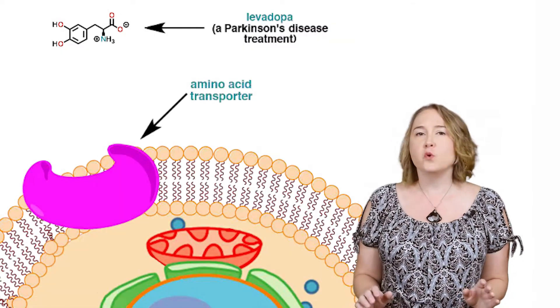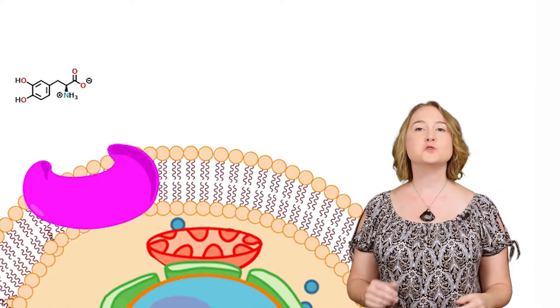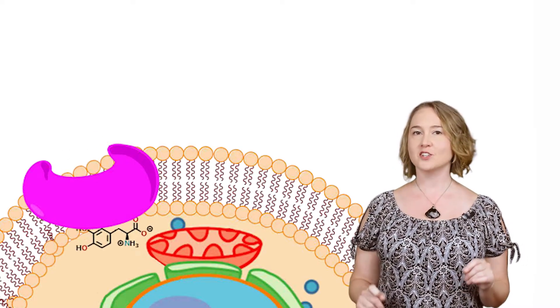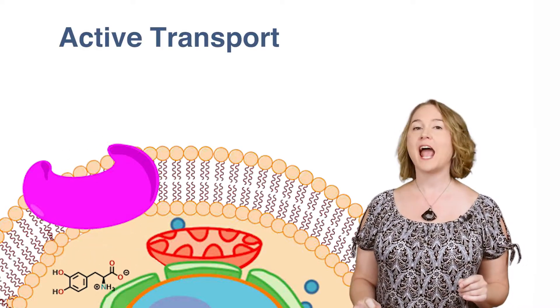Other drugs can actually fool a transporter protein that is used by vitamins or nutrients to make its way through the cells of the intestinal lining by a process called active transport.